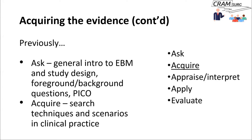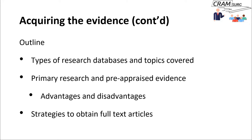We then talked about acquiring the evidence, focusing on search techniques — how to search the literature — using PubMed as an example, and we covered a couple of clinical scenarios where we generated questions and searched the literature. In the next ten minutes we'll talk about types of research databases and the topics they cover, primary research versus pre-appraised evidence, their advantages and disadvantages, and how to obtain full text.